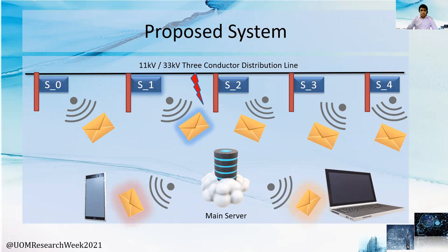This is the overall structure of our proposed system. It shows where sensors are placed and how data is circulated. The fault detection algorithm is executed in each sensor node and when it detects a fault condition, the captured fault data is transmitted to the main server. There, the fault localization process takes place and is communicated to relevant authorities via web application or SMS.